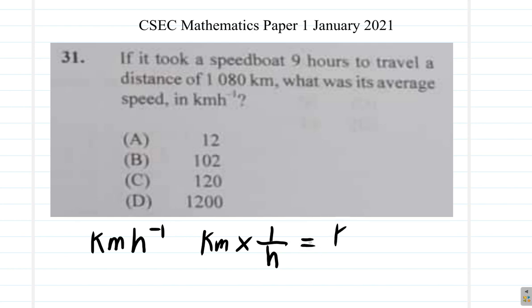So it's really km over 1 times 1 over h. Kilometer times 1 is km. 1 times h, 1 times anything is the number itself. So it's km divided by hour. You must put km over hour.